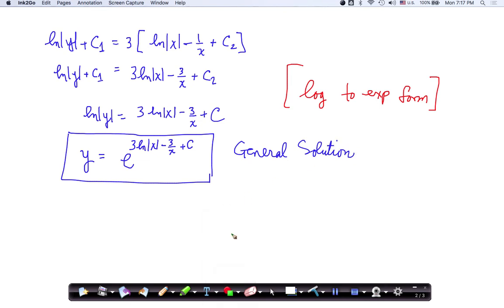I'm going to keep going just a little bit further because I want to show you a different format that this could be written in. When I have e raised to that power, understanding how properties of exponents work, this is really e to the 3 natural log of x times e to the negative 3 over x times e to the c. And keep in mind now, e to the c, well, e is a constant raised to the c, that's some other constant. So I can rewrite this as follows. This is c, I'm just going to move that in the front here, 3 natural log of the absolute value of x times e to the negative 3 over x.